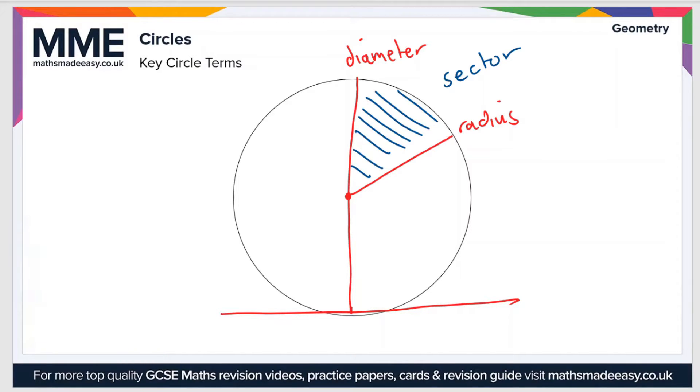Next we'll draw a tangent. A tangent is a straight line on the edge of the circle that meets a radius at a right angle. Let's label that tangent.